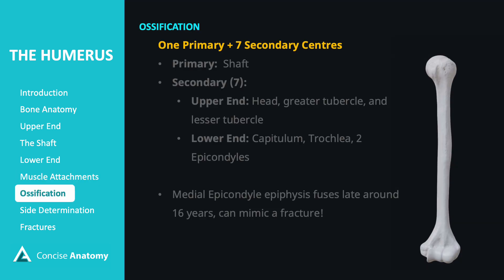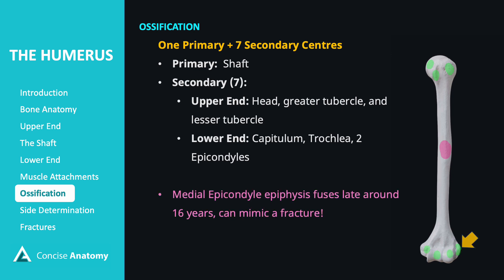The humerus ossifies from one primary center in the shaft and seven secondary centers. At the upper end, secondary centers are found in the head, greater tubercle, and lesser tubercle. At the lower end, secondary centers include the capitulum, trochlea, and lateral and medial epicondyles. The medial epicondyle epiphysis fuses later than the others, around 16 years of age, which can sometimes appear as a fracture on x-rays.